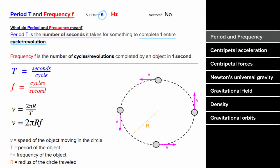The frequency is the number of cycles, circles, or revolutions completed in one second. So if there's some process that's repeating, the number of times the process repeats in one second would be the frequency. This means it has units of one over second, which is just called the hertz.